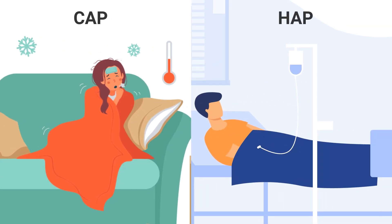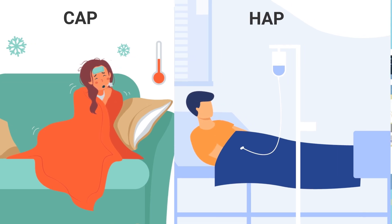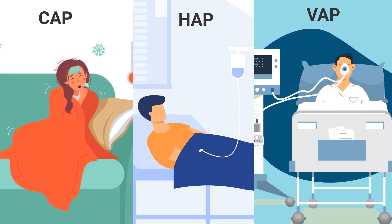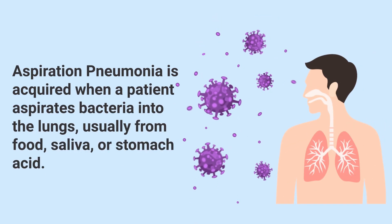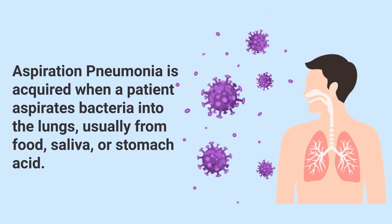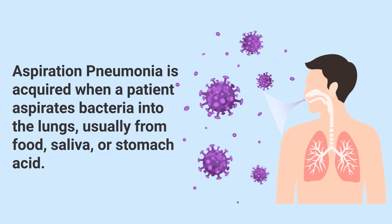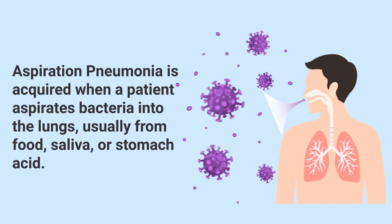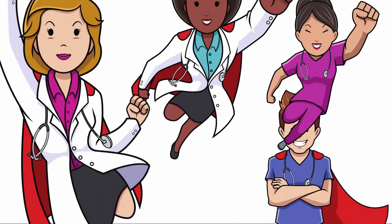Hospital-acquired pneumonia, as the name suggests, is when a patient gets it during their hospital stay. Ventilator-associated pneumonia is when it's acquired while the patient is on a mechanical ventilator. And lastly, aspiration pneumonia is acquired when a patient aspirates bacteria into the lungs, usually from food, saliva, or stomach acid.